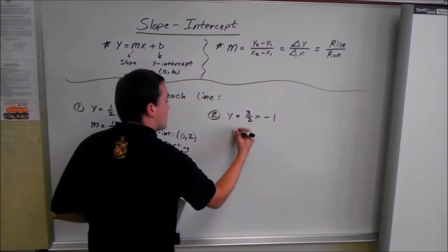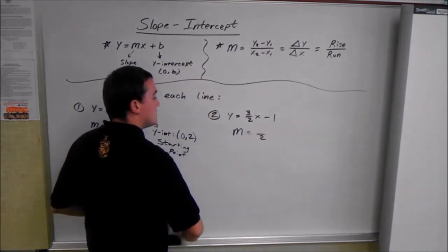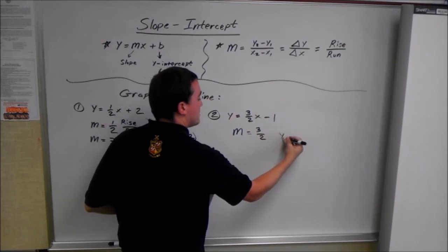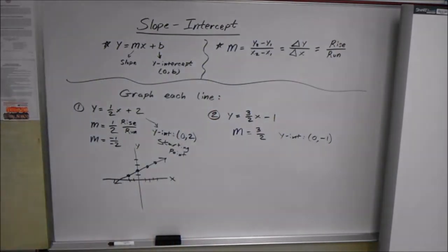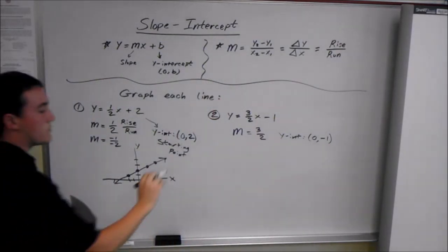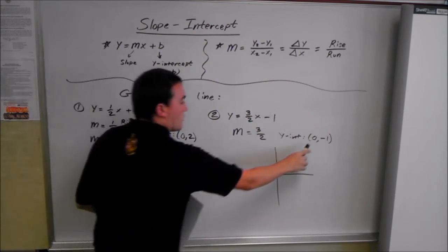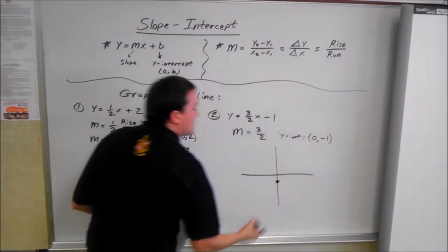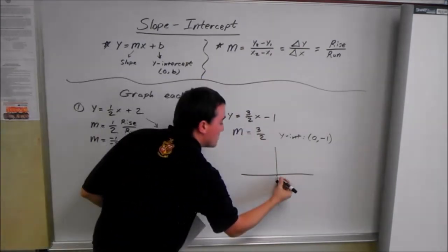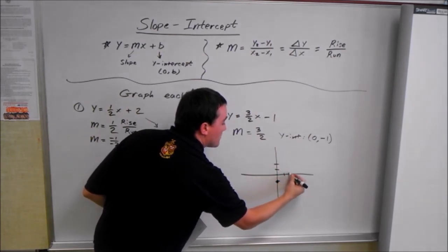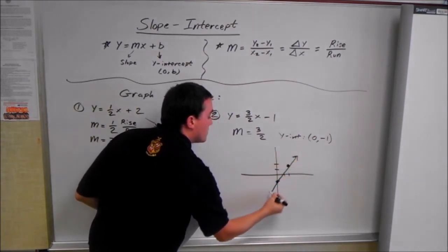Next one. The slope is 3 over 2 — just the number in front of the x. And the y-intercept is 0, negative 1. So we start at 0, negative 1 on the y-axis. Then we use the slope: up 3, over 2 to find the next point. You really only need two points to draw a line, so that would be it.